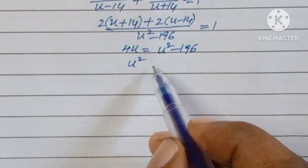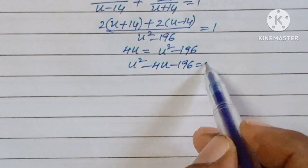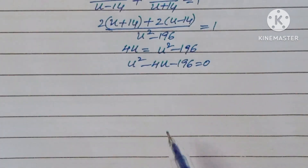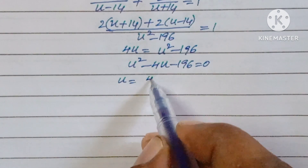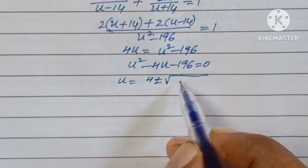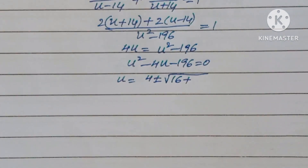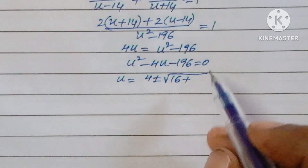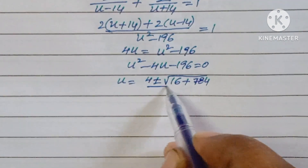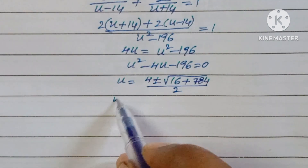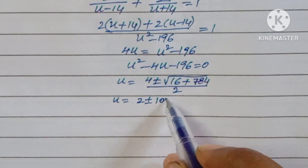Rearranging: u squared minus 4u minus 196 equals 0. Applying the quadratic formula: u equals (4 plus or minus root of 16 plus 784) over 2, which simplifies to u equals 2 plus or minus 10 root 2.